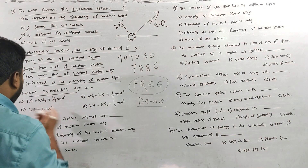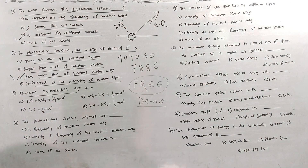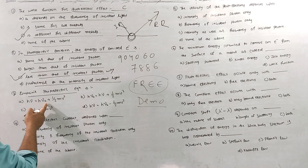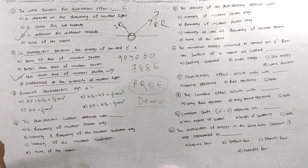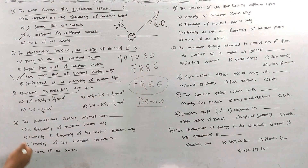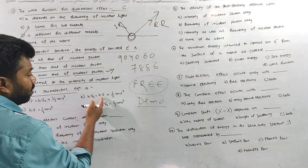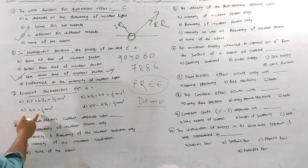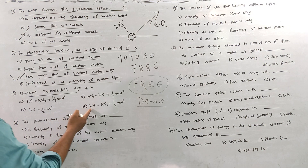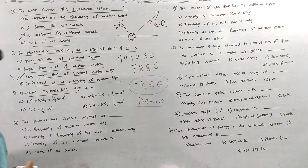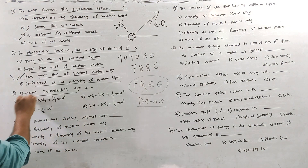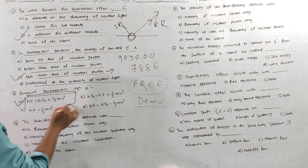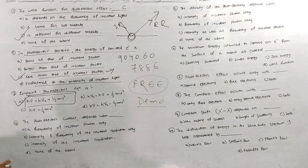Einstein's photoelectric equation: hν = hν₀ + ½mv². This is the direct definition. hν₀ is the work function, and ½mv² is the kinetic energy of the emitted electron. So the answer is hν = hν₀ + ½mv².